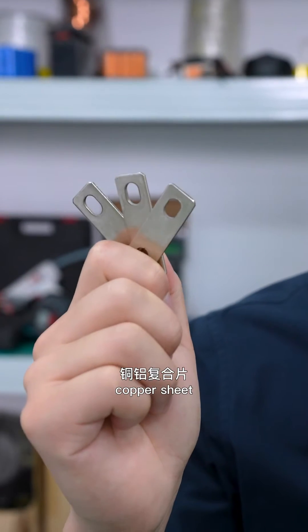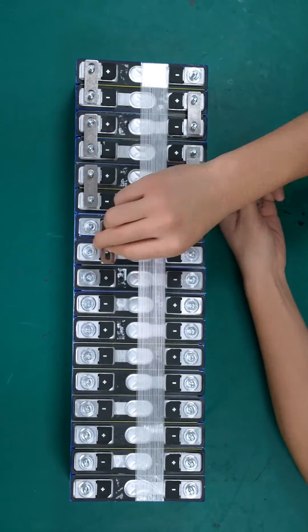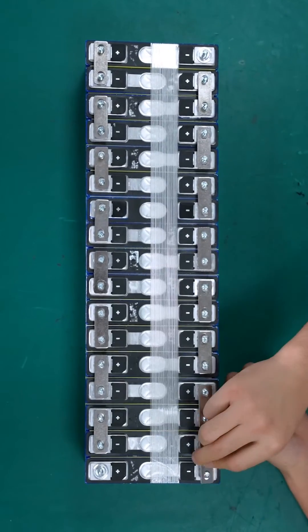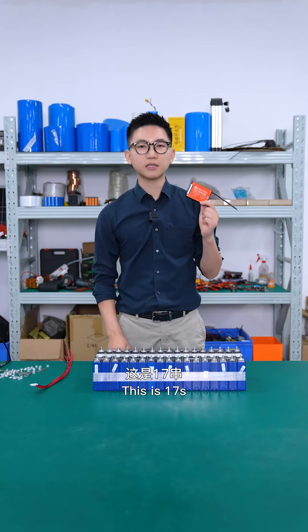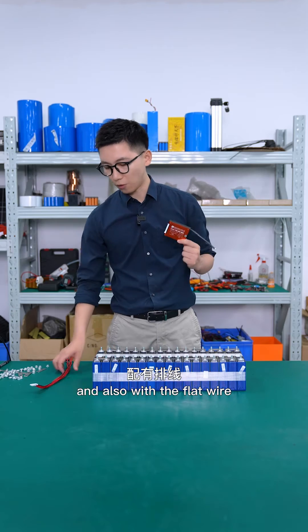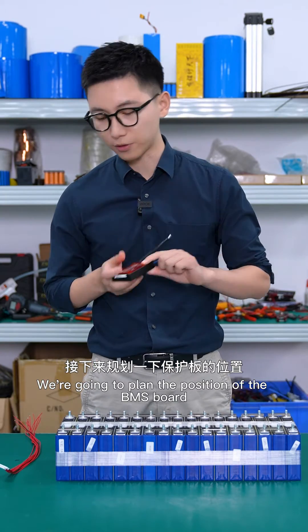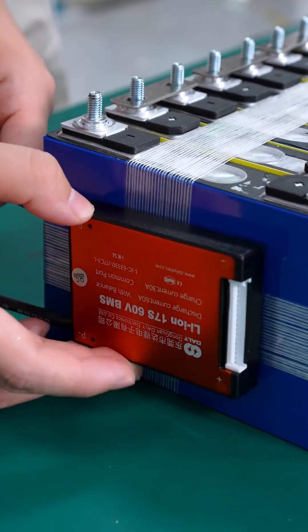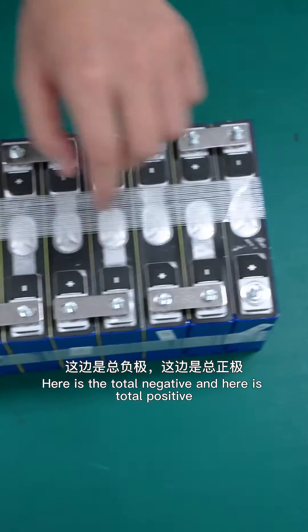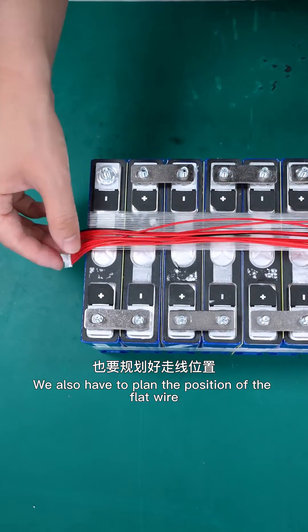We're going to use this nickel sheet to make a connection of the battery cells. This is 70 series, 60V BMS board for lithium battery. Also with the flat wire. We're going to plan the position of the BMS board. We're going to put it here. Here is the total negative and here is total positive. Also for the flat wire, we also have to plan the position of the flat wire.